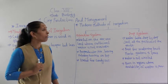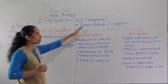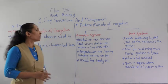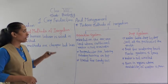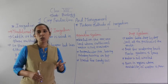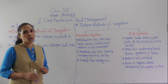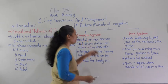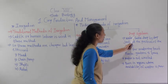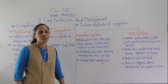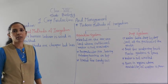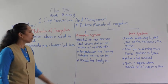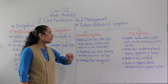Now we will discuss about the modern methods of irrigation. There are basically two main types of modern methods of irrigation: the sprinkler system and the drip system. We will discuss them one by one, starting with the sprinkler system.